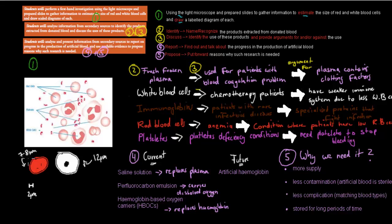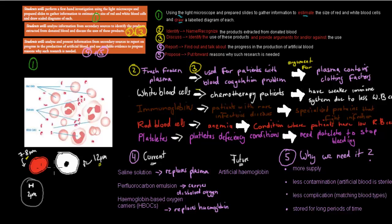To estimate the size, you need to know that red blood cells are 7 to 8 micrometres, and white blood cells are roughly 12 micrometres in size. You also need to be able to draw a labelled diagram with a scale, and know that white blood cells have a nucleus whereas red blood cells have no nucleus.